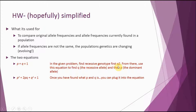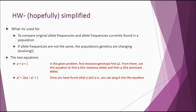If you are given the recessive genotype frequency, you can take the square root of it to find q, then plug that back in to find p. After that, you just plug your numbers into the equation to find the frequency of 2pq. Remember, 2pq is simply the frequency of heterozygotes in a population.